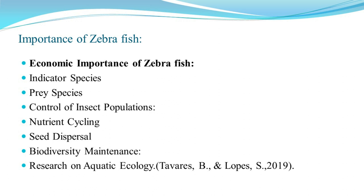Regarding importance — first, ecological importance: as an indicator species, zebrafish reflect changes in water quality, habitat degradation, and pollution. They are also important prey species for many predators like larger fishes, birds, and aquatic mammals. Zebrafish also help control insect populations — they feed on mosquito larvae, reducing insect-borne diseases.